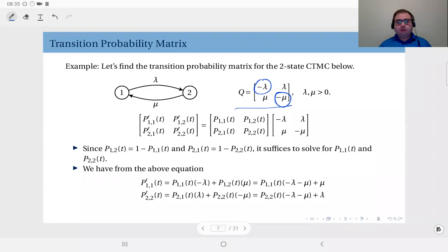To compute the matrix P of t, we are going to employ the equation we have just seen. The derivative of the state transition probability matrix equals the state transition probability matrix times the infinitesimal generator.